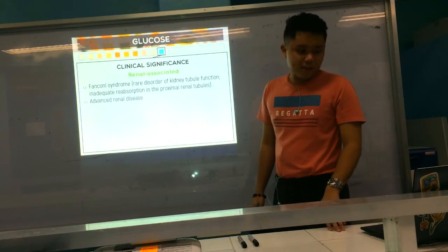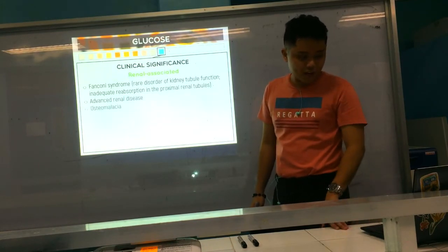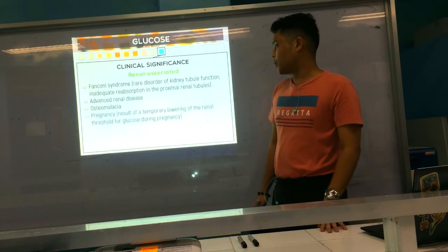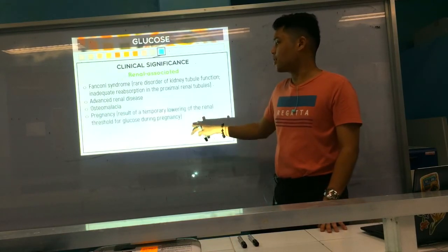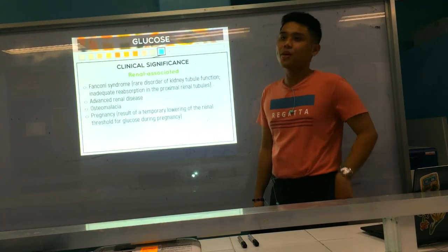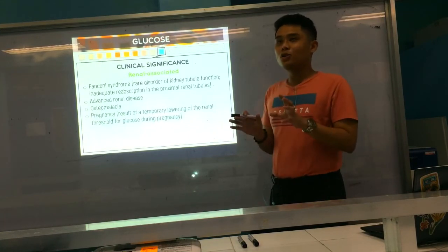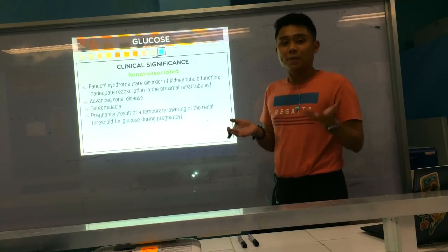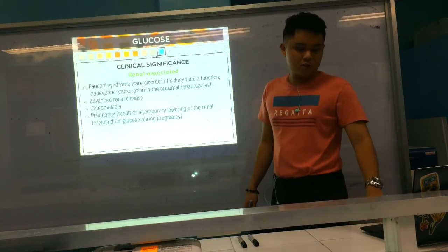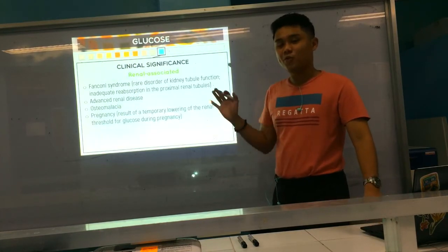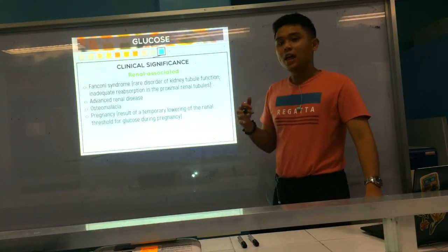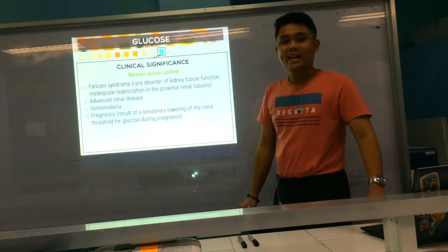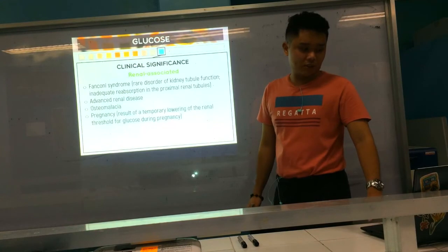Other renal-associated conditions include advanced renal disease, osteomalacia, and pregnancy — because during pregnancy, the renal threshold for glucose is lowered. So even at lower glucose levels in the body, since the renal threshold has decreased, there is a greater chance that glucose will be released into the urine.